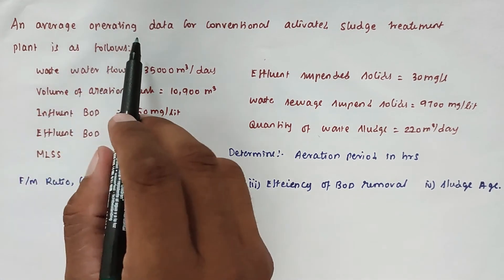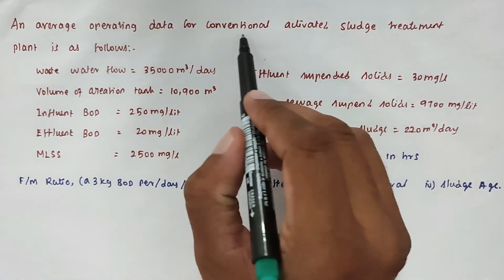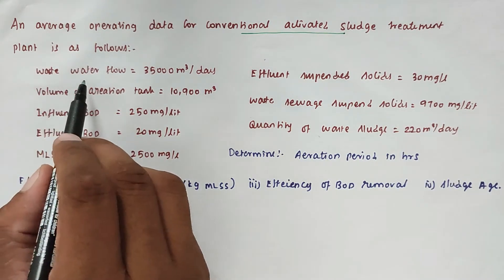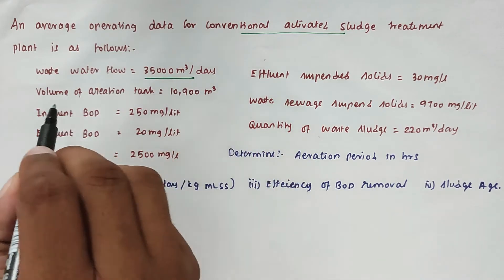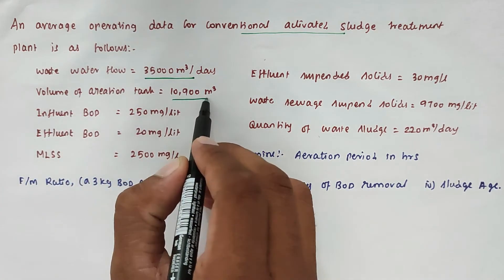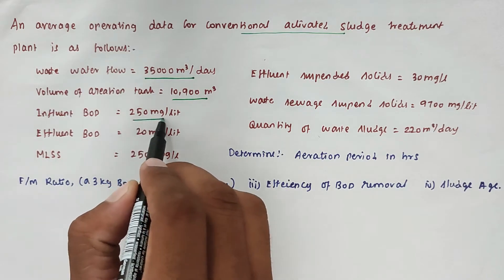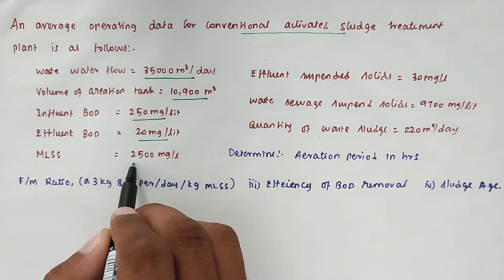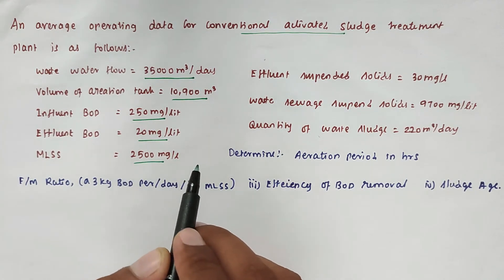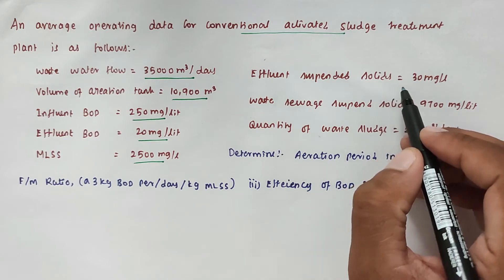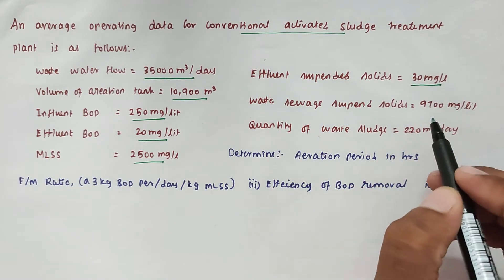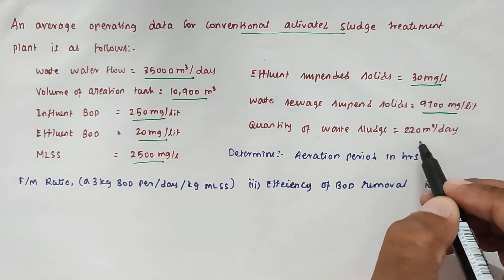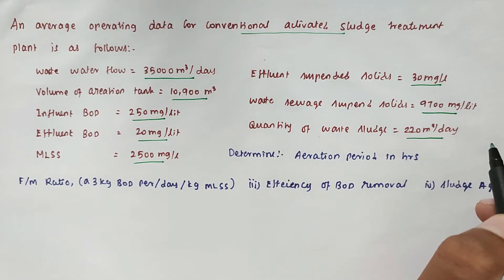The problem is: an average operating data for conventional activated sludge treatment plant is as follows. Wastewater flow is 35,000 m³ per day, volume of aeration tank is 10,900 m³, influent BOD 250 mg per liter, effluent BOD 20 mg per liter, MLSS 2500 mg per liter, effluent suspended solids is 30 mg per liter, waste seawater suspended solids 9700 mg per liter, and quantity of waste sludge is 220 m³ per day.